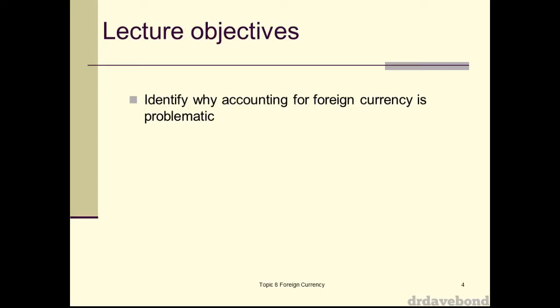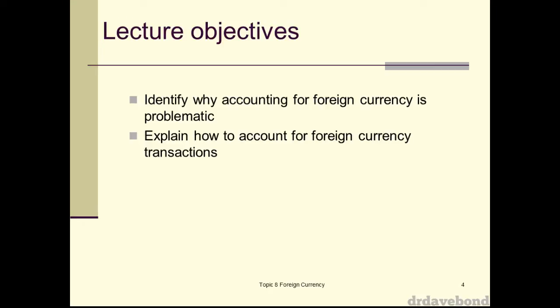But because foreign exchange rates move, that creates issues. A company may have borrowed $500,000 US at a certain exchange rate, so the Australian dollar value of that debt is a certain amount. If that exchange rate changes, the Aussie dollars owed will be different even though the US amount stays the same. The issue is how we deal with that. There are two aspects: one is around transactions overseas — buying, selling, borrowing, or lending.